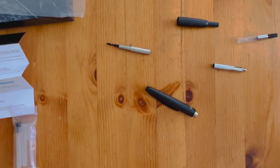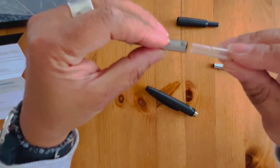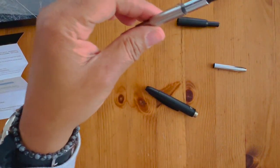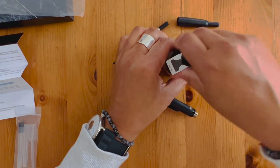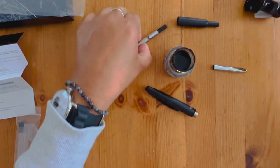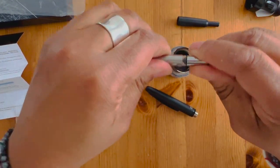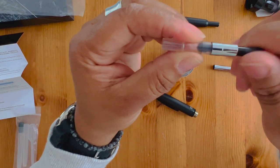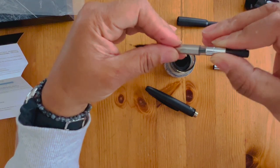I'm going to go ahead and fill mine up with the converter. Over here to the side I've got some Lexington Gray Noodler's ink. I'm going to go ahead and just uncap this. Let me just pull this back out because I want to make sure that this is all the way down first and then I'll suck up some ink here.